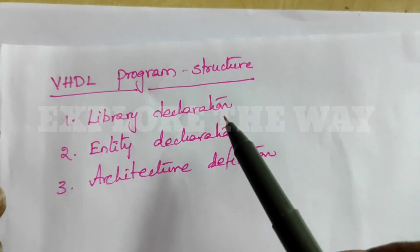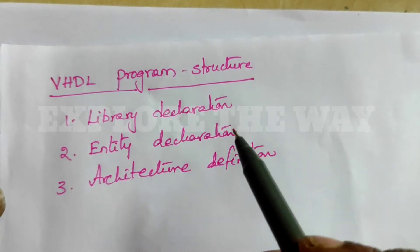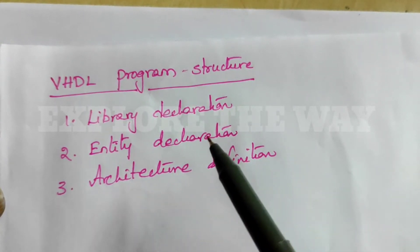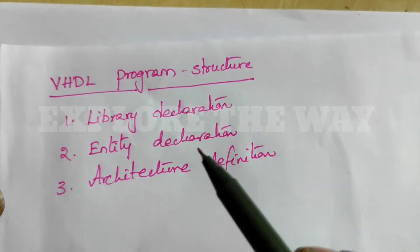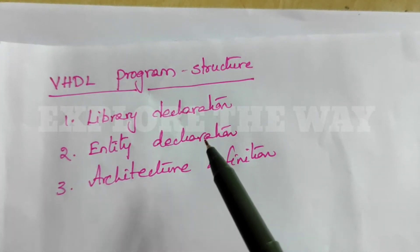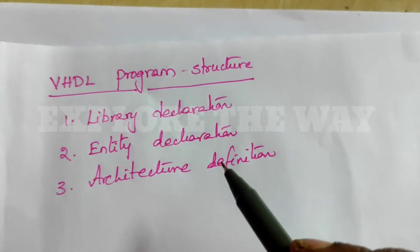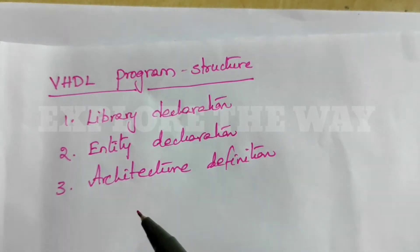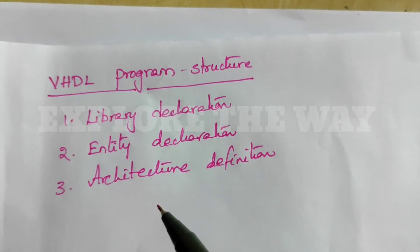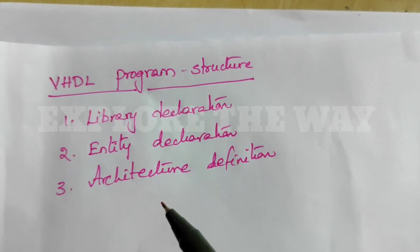The first one is library declaration. To describe any hardware, some components are required, and all the components are available in a library. You should declare that library while writing VHDL code. VHDL is one of the IEEE standards, so generally by default we are using the IEEE library.